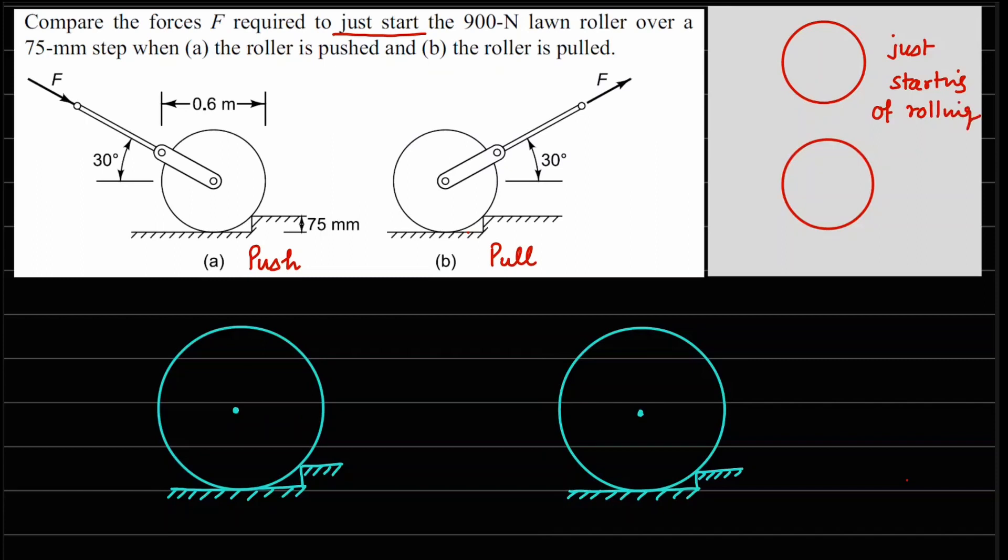So in this case what will happen is right at the bottom, at this point right here, as soon as the roller is about to start, it's going to lose contact here. And if it loses the contact, the normal reaction at this point which was earlier there, it will become zero.